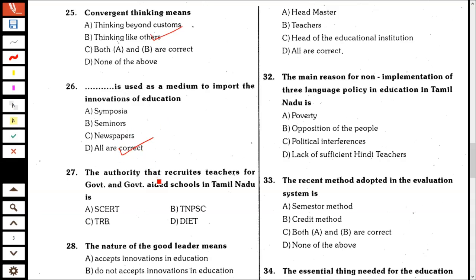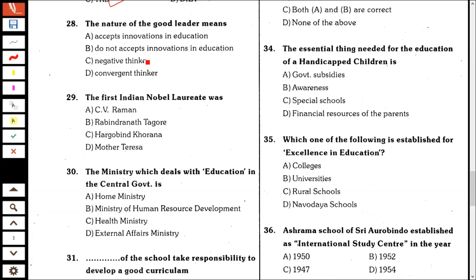The authority that recruits teachers for government and government-oriented schools in Tamil Nadu is TRB. The nature of a good leader means accepts innovation in education. The first Indian Nobel laureate was Rabindranath Thakur (Tagore). The ministry which deals with education in the central government is the Ministry of Human Resource Development.